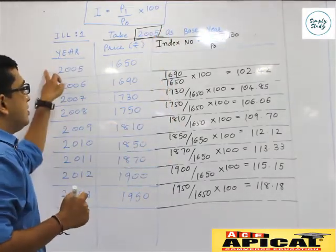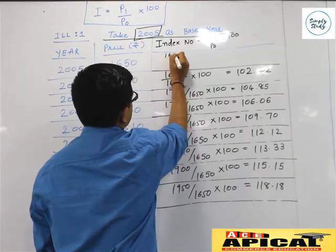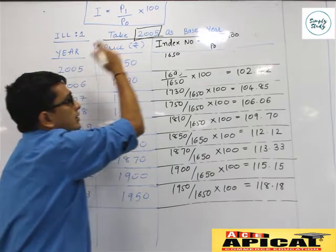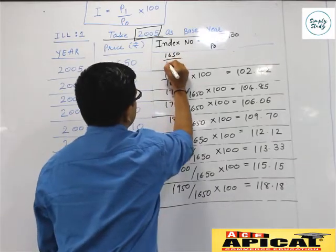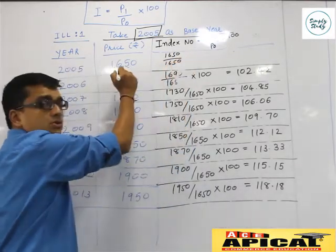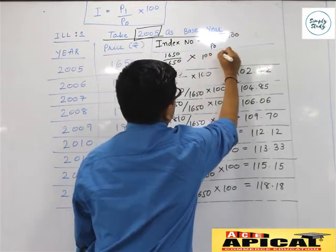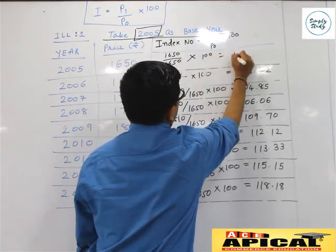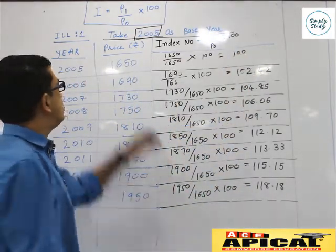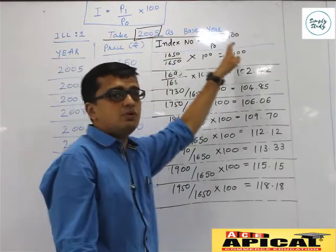The base year which we need to take is mentioned in the question, that is 2005. So P1, the current year value, is 1650 for 2005. P0, the base year value, is also 1650. So 1650 upon 1650 into 100 gives you 100. The index number derived for the year 2005 using the fixed base method is 100.